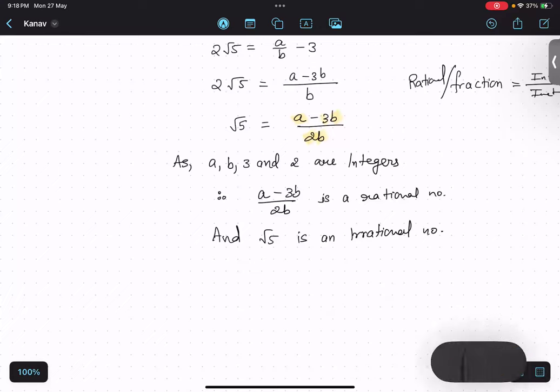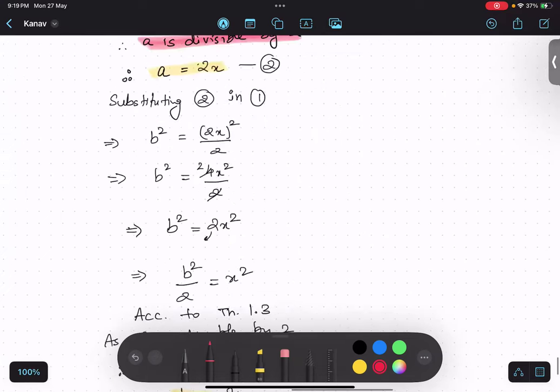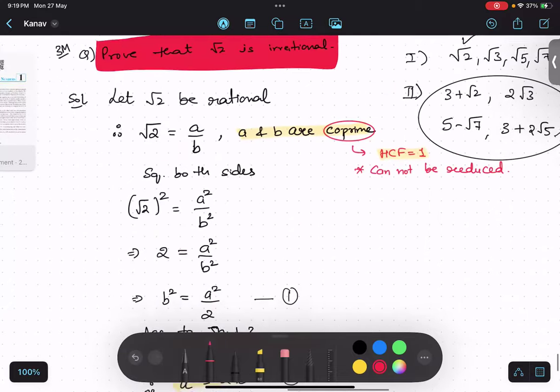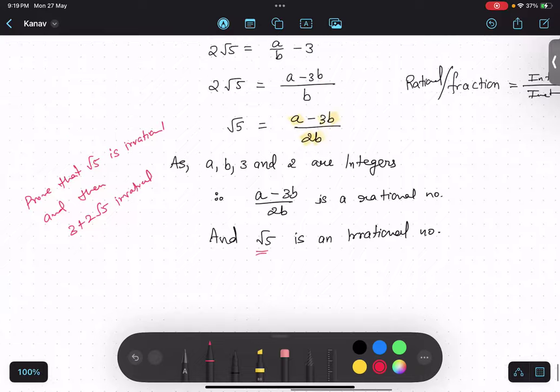So there can be two types of quotients. One question can be: prove that root 5 is irrational, or prove that 3 plus 2 root 5 is irrational. In that case, you have to prove root 5 also irrational the long way, what we did earlier. Is that thing clear? Then how many marks will this carry? That type of quotient will be for 4 marks.